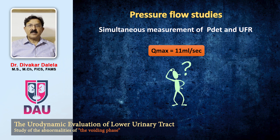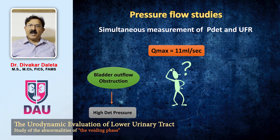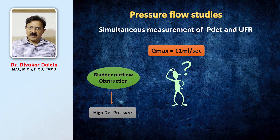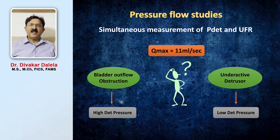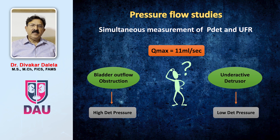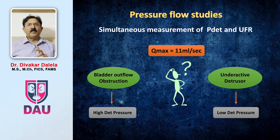So why is low Q-max happening in a patient? This can be either due to bladder outflow obstruction — in that scenario, the bladder will record high detrusor pressure — or this can be due to an underactive detrusor muscle, where the pressure flow study will record low detrusor pressure. So with low Q-max, you can have either high bladder pressure or low bladder pressure.